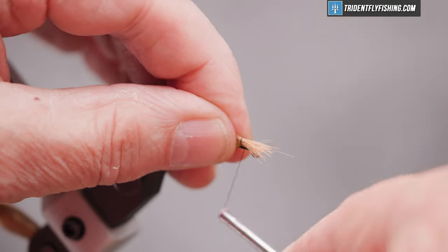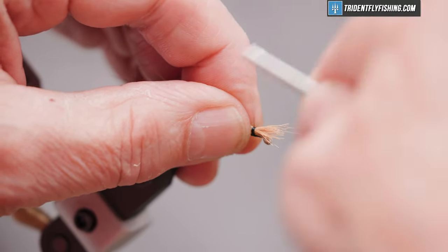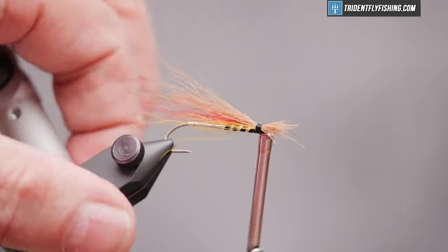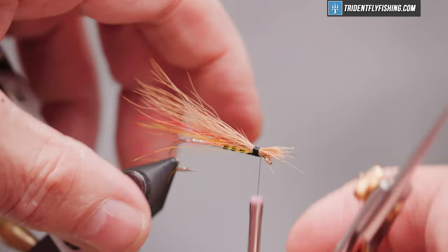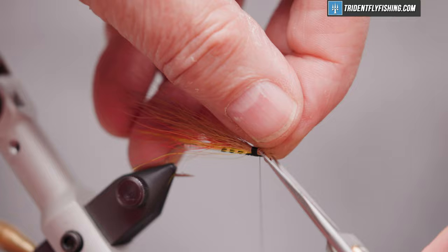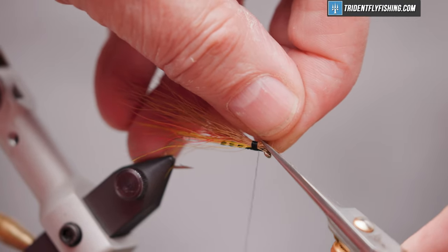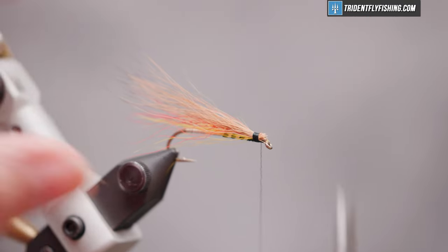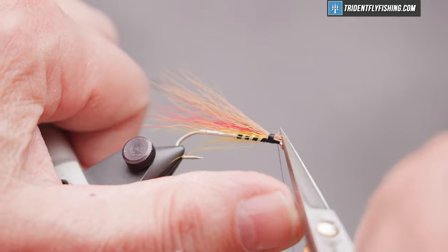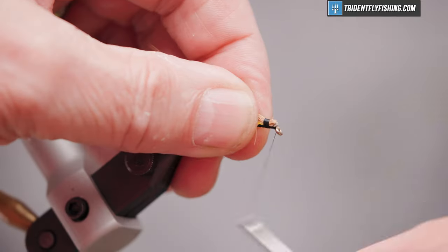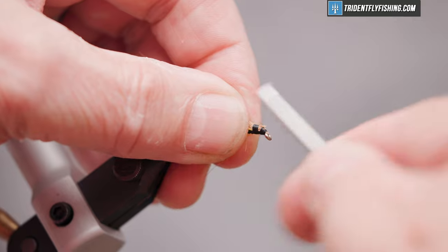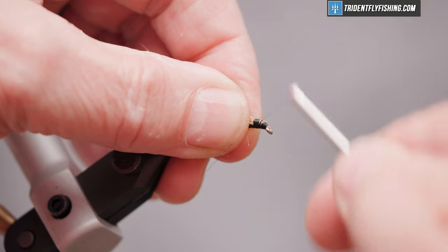Again, nice tight turns. Slippery material. Sneak in there and cut off the excess. Jump your thread up to the eye and then wrap backwards to cover all the material.